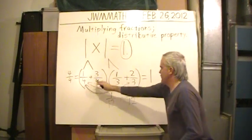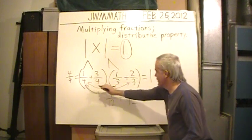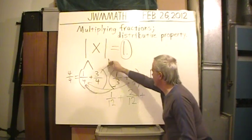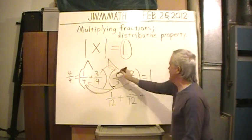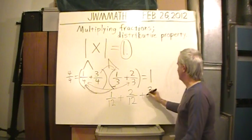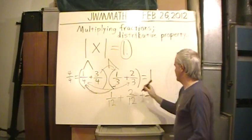Now I have this 3/4. I've done the multiplication for 1/4. I'm going to do the 3/4. So, 3/4 times the 1/3. 3 times 1 is 3. And the 4 times the 3 is 12.